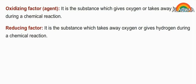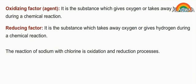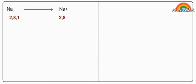The reaction of sodium with chlorine is an oxidation and reduction process. 2Na plus Cl2 produces 2NaCl. Sodium's electronic configuration is 2,8,1. Sodium loses one electron during the chemical reaction and changes into Na positive ion.